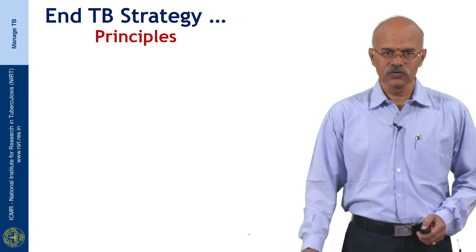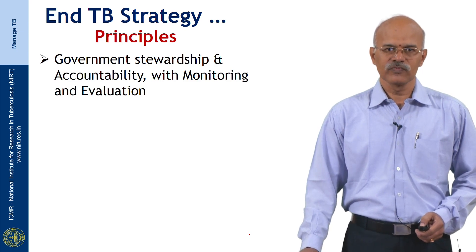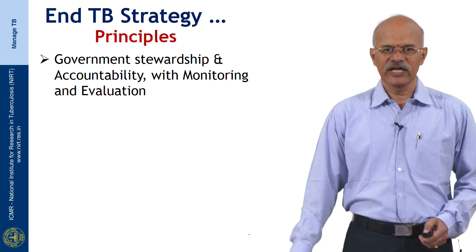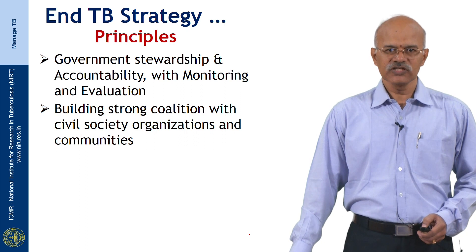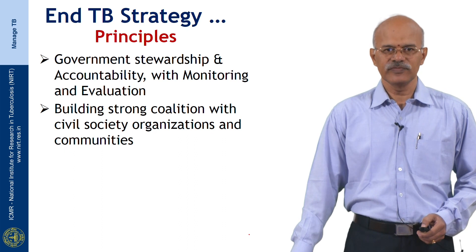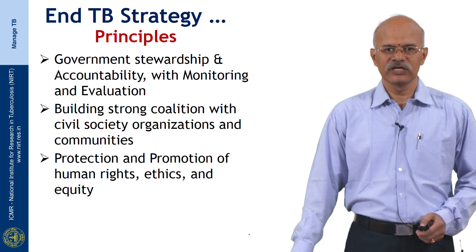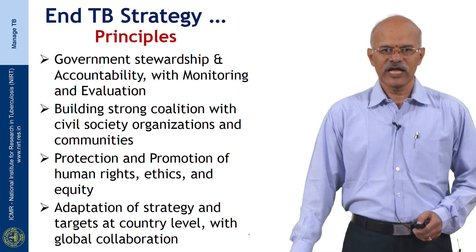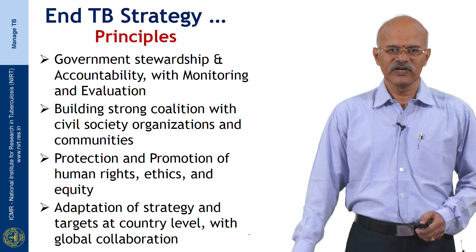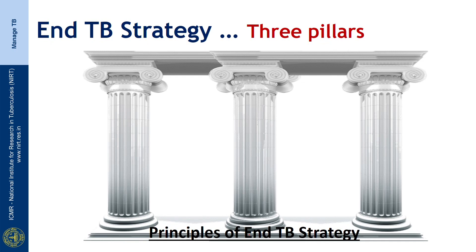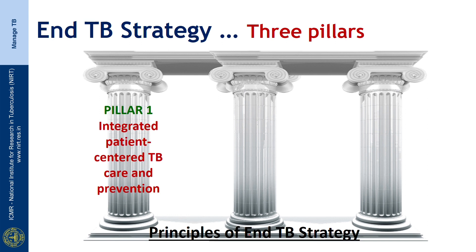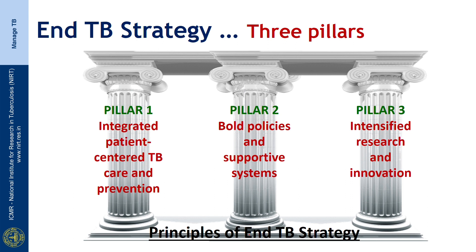There are 4 principles for the End TB Strategy: government stewardship and accountability with monitoring and evaluation; building strong coalitions with civil society organizations and communities; protection and promotion of human rights, ethics, and equity; and adaptation of strategy and targets at country level with global collaboration. There are 3 pillars: Pillar 1 — integrated, patient-centered TB care and prevention; Pillar 2 — bold policies and supportive systems; and Pillar 3 — intensified research and innovation needed for further control of TB disease.